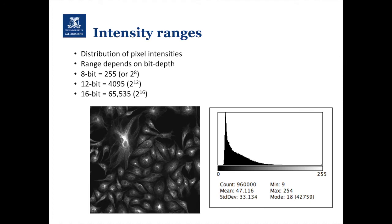We covered in the Fiji for beginners workshops this intensity graph on the right-hand side and how it relates to the microscope image. On the x-axis we have the intensity values on an 8-bit range from 0 to 255 grayscale values. This can also be 12-bit with 4095 grayscale values, or 16-bit with 65,000 grayscale values.